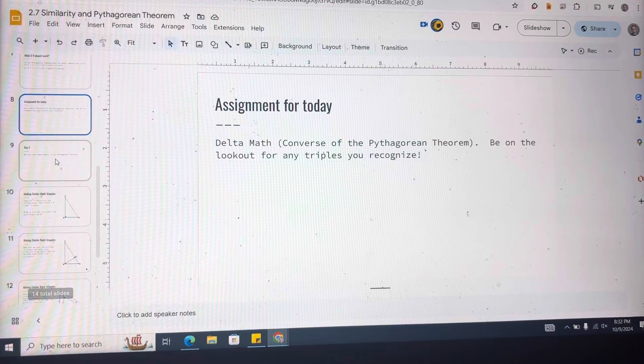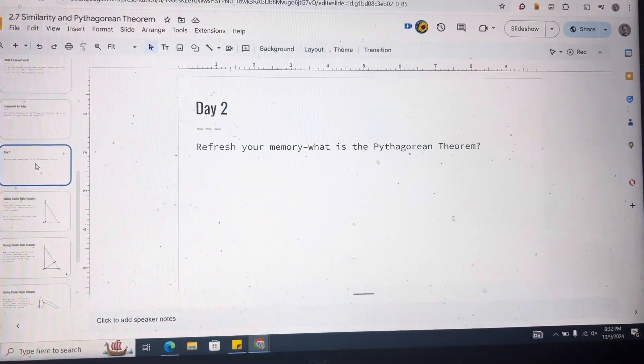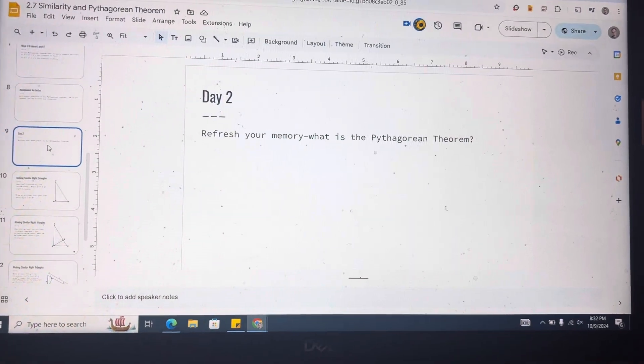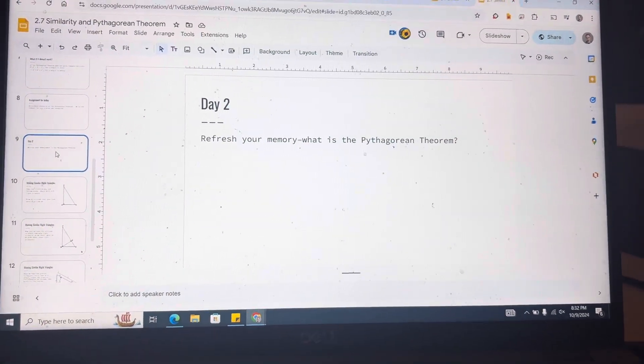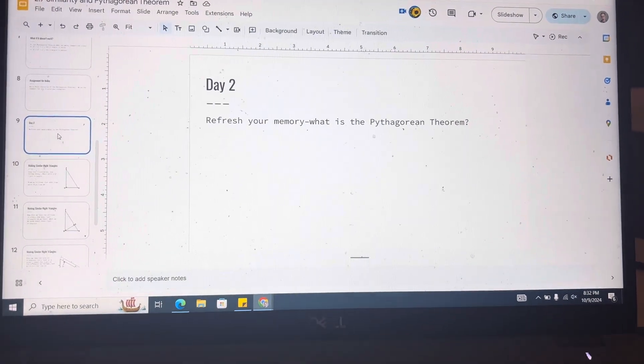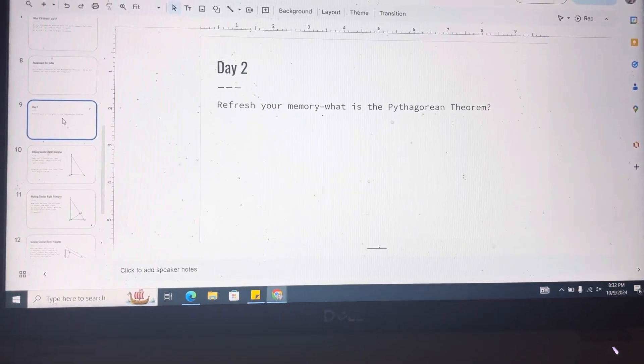So now for day 2, this is kind of fun, refresh your memory. What is the Pythagorean theorem? The Pythagorean theorem is a squared plus b squared is equal to c squared. It only works in right triangles. I'm going to turn on this light real fast because I need to work on paper. Almost forgot. Okay, sorry. Here we go.